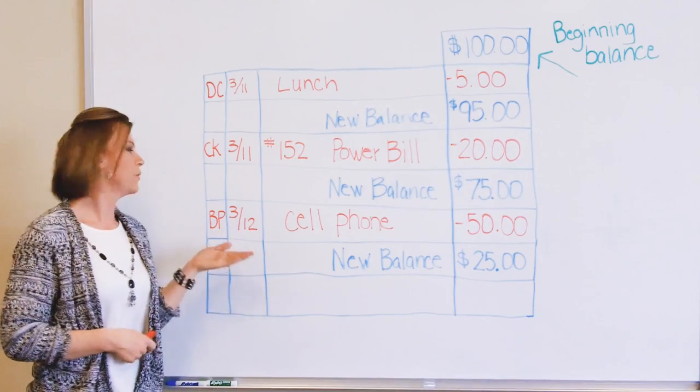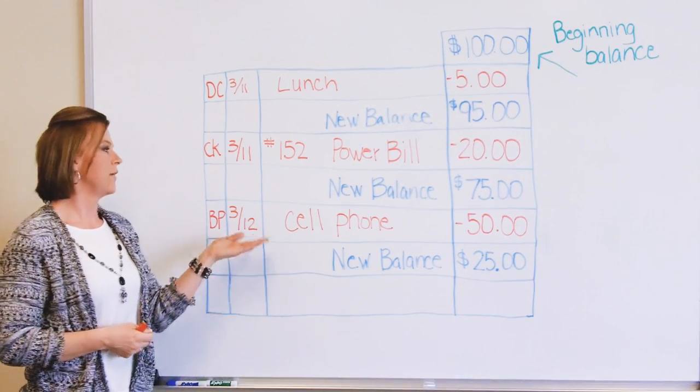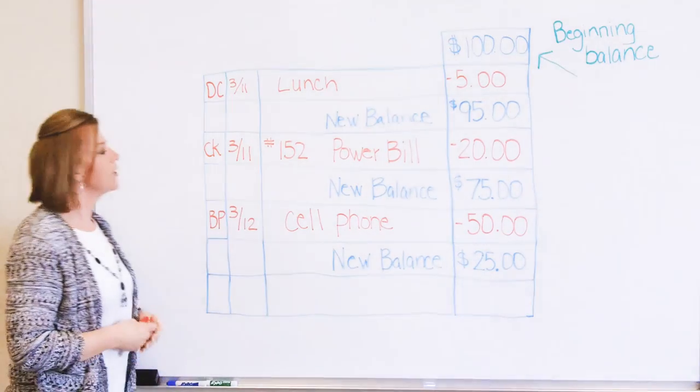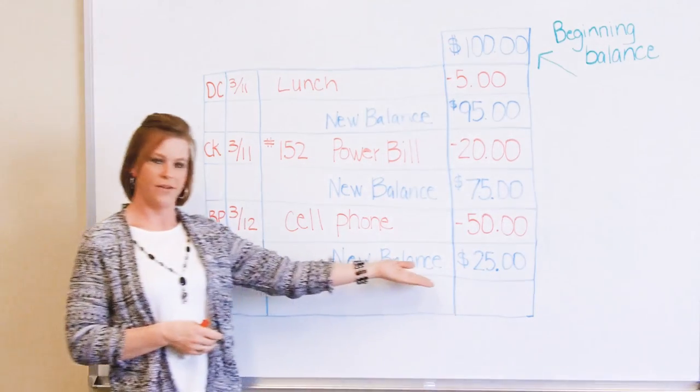In our next line, we have a bill payment of a cell phone for $50, bringing our new balance to $25.